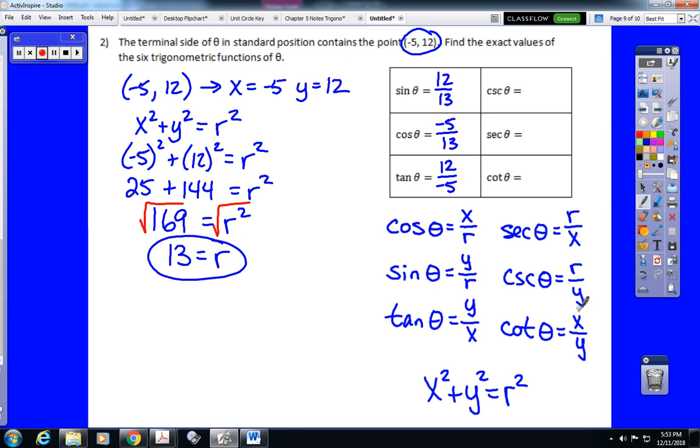Cosecant is r over y. That's 13 over 12, which does not reduce. Secant is r over x. That's 13 over negative 5, which does not reduce. And cotangent is x over y. That is negative 5 over 12. Again, you should be trying these problems on your own before coming to this video to get the solution.